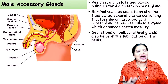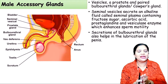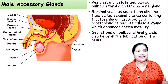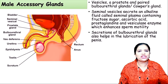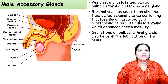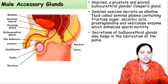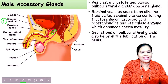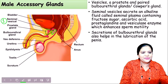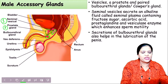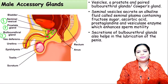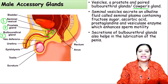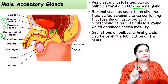In addition to the testes, the male reproductive system has three important accessory glands. The first is the seminal vesicle. The second is the prostate gland. The third is the bulbourethral gland, also called Cowper's gland. The seminal vesicle and bulbourethral gland are present one on each side, but the prostate gland is only one.